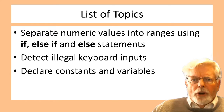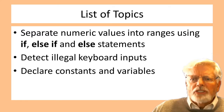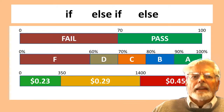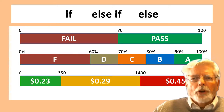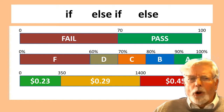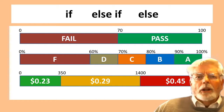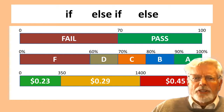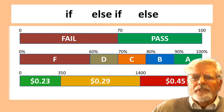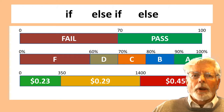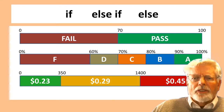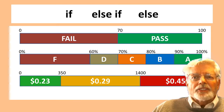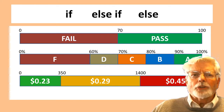Also included are the declaration of constants and variables. The IF, ELSEIF, and ELSE statements can be used to separate numeric values into different categories. For example, in one exercise, a test score of 70 or greater at the DMV is a pass and anything below that is a fail. We can also compute letter grades of A, B, C, D, or F based on a score percentage.